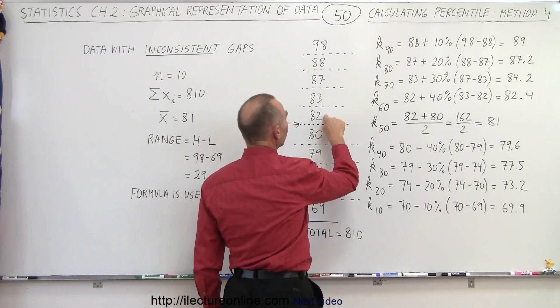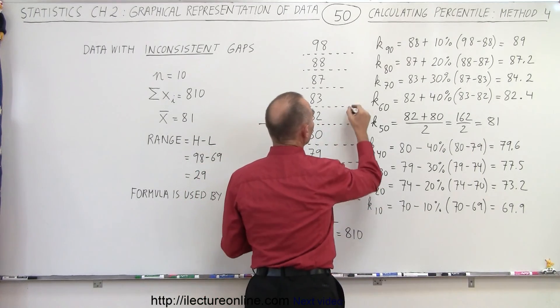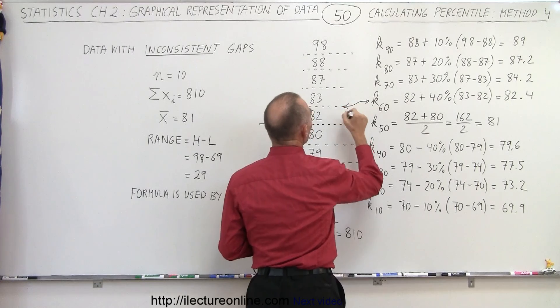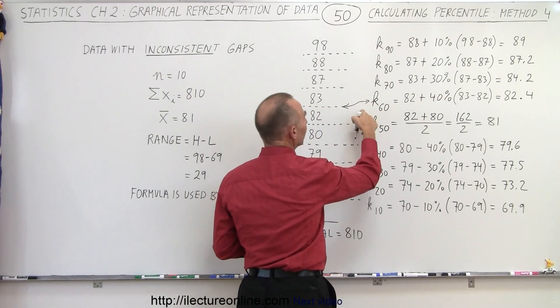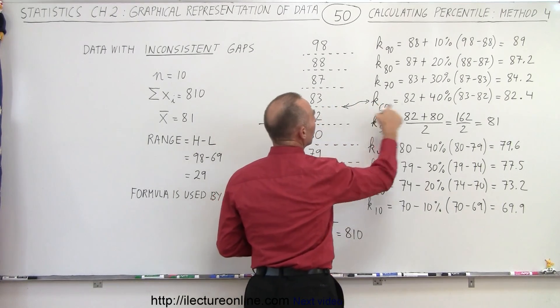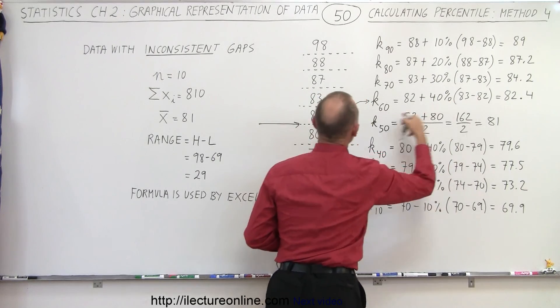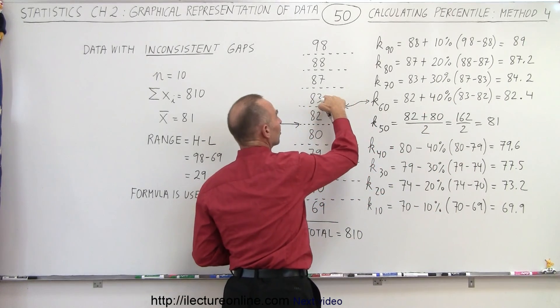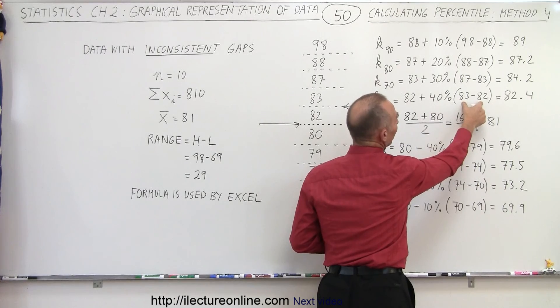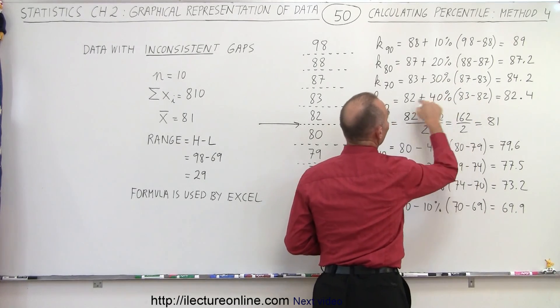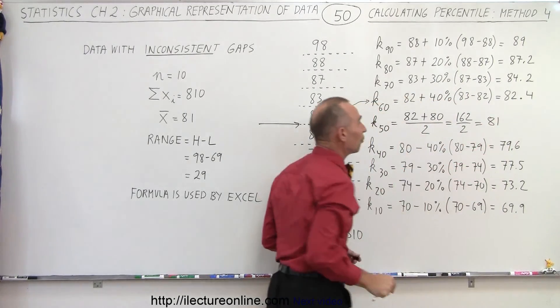So in this case, we take the lower of the two values. So remember that this here, this is the boundary that is represented by the 60th percentile. We take the lower value plus 40% of the difference between this value and the value on the other side of the boundary. 40% of the difference is 40% of 1, which is 0.4. Add to 82, you get 82.4.